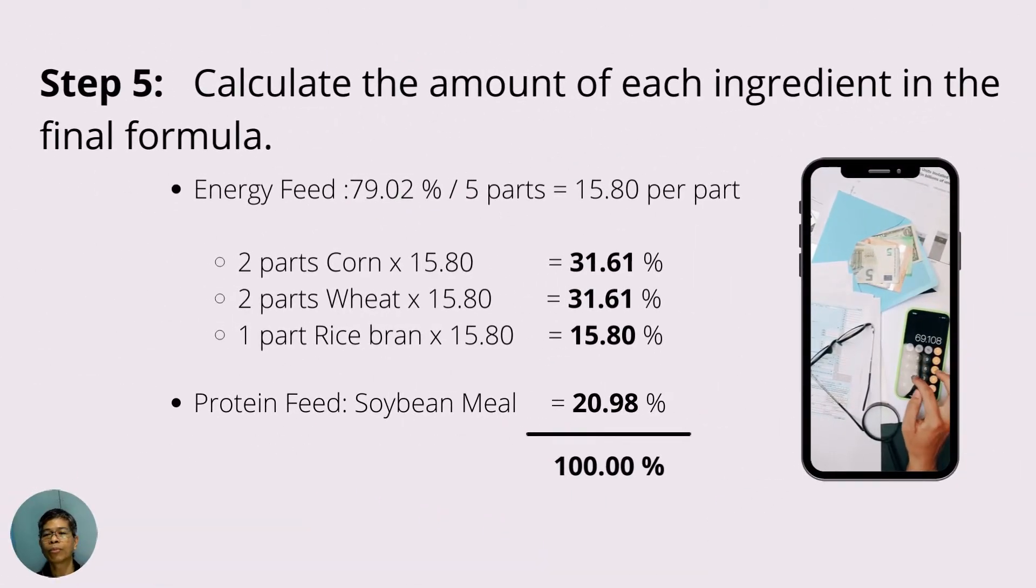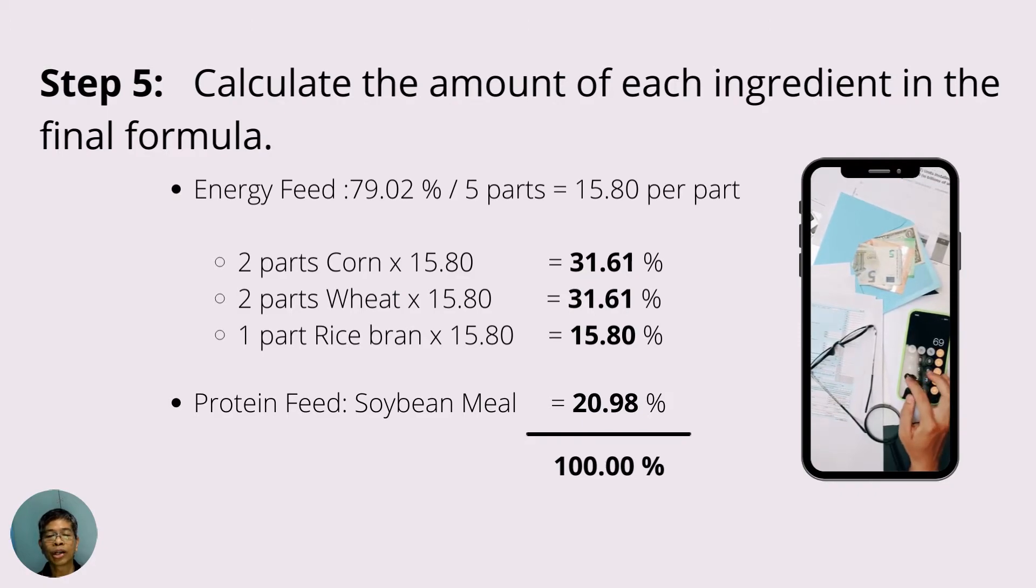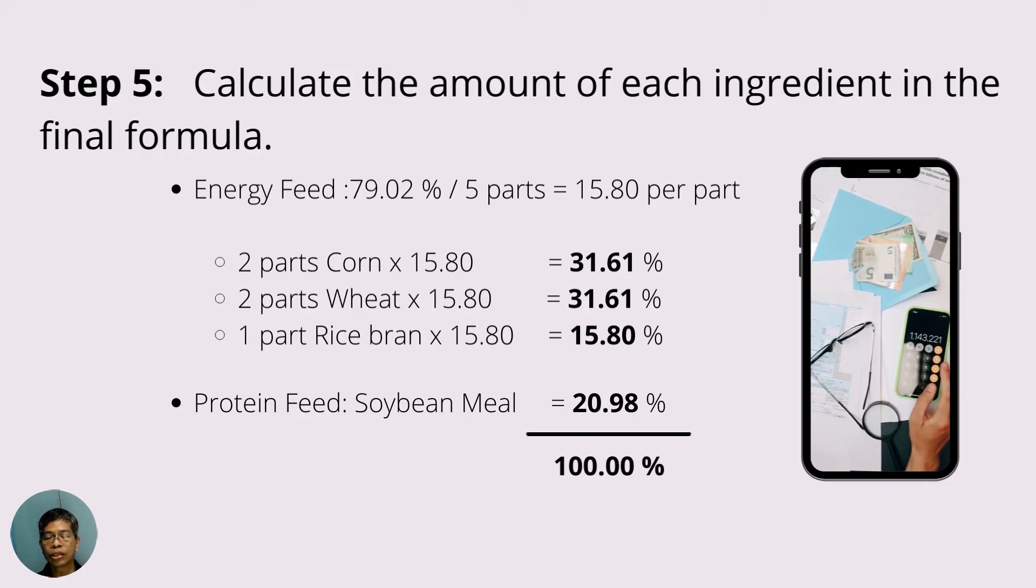For step number 5, we will now determine the exact amount of each ingredient that will be used in the formula. We have calculated that the energy feed is 79.02% of the formula, but we know that this is composed of three ingredients with a ratio of 2 is to 2 is to 1. So what we need to do is divide 79.02 by 5 to get the amount of one part. Calculating 79.02 divided by 5 gives us 15.8.